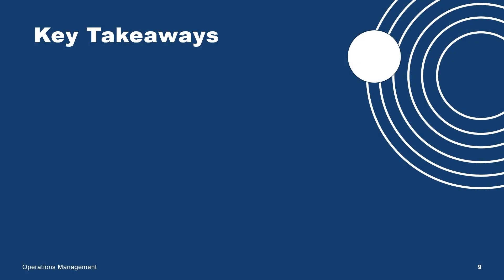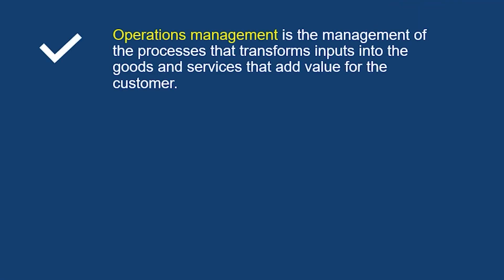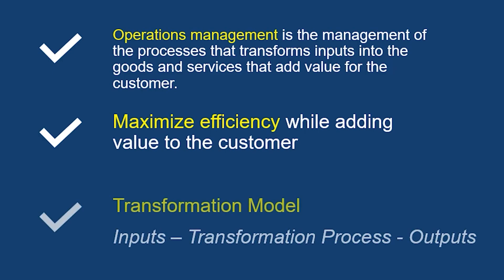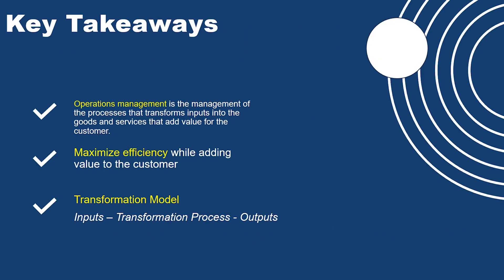Key takeaways: Operations management is the management of processes that transform inputs into goods and services that add value to the customer. The goal is to maximize efficiency while adding value to the customer. That is usually done through the transformation process or transformational model, in which we take inputs and transform those inputs to generate outputs.